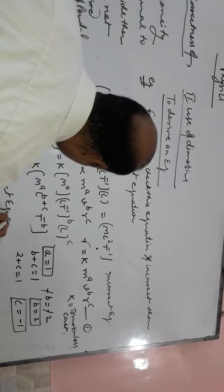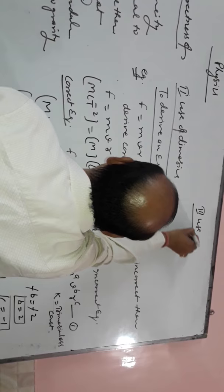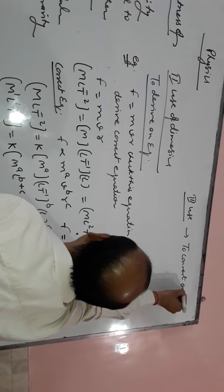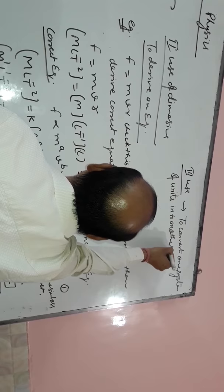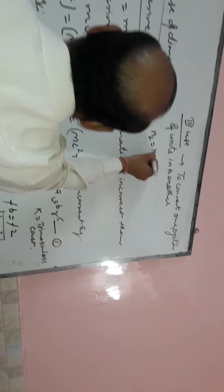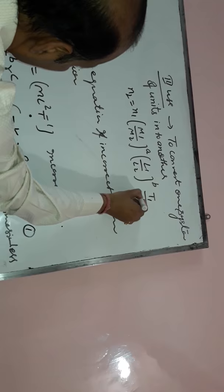Third use of dimension: To convert one system of units into another. N₂ equal to N₁ times (M₁/M₂)^A times (L₁/L₂)^B times (T₁/T₂)^C.